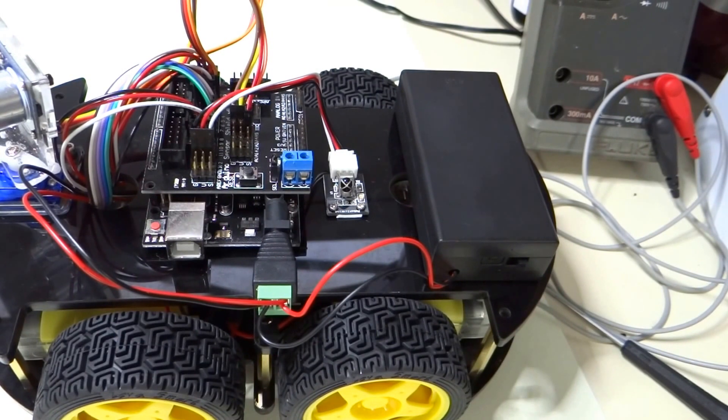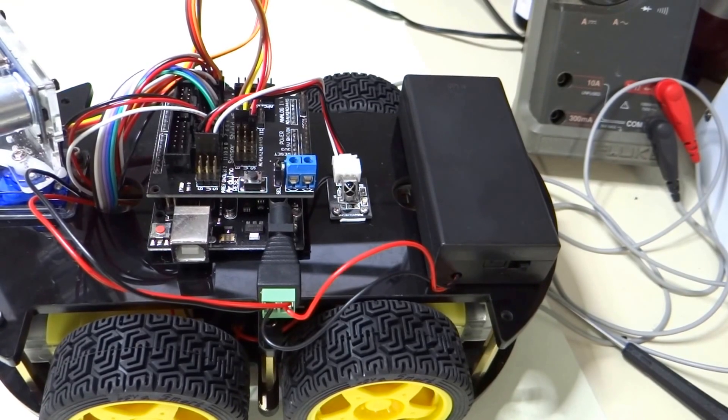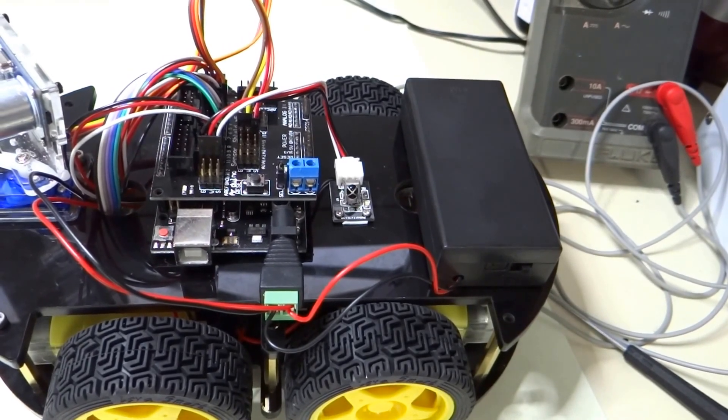Let's load the auto go program now. This program will have the car go forward about half a second, back up about half a second, turn left half a second, and turn right half a second. So let's go ahead and load auto go.